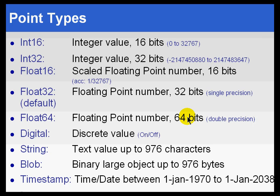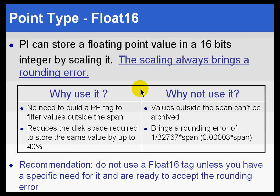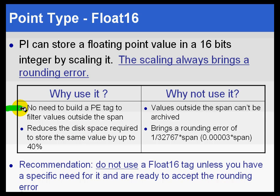We looked at point types a little bit earlier. Let's concentrate now on some unusual point types. Let's look at Float 16 first. Float 16 is a type of point designed to save on disk space and to maintain compatibility with earlier versions of PI. It has a couple of advantages — it's smaller, as the name would imply with 16 versus Float 32. But it is not as accurate.